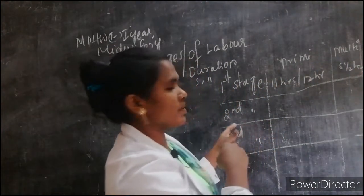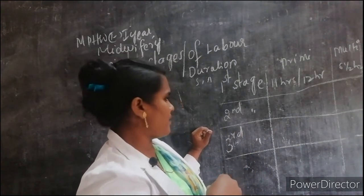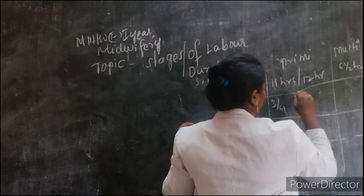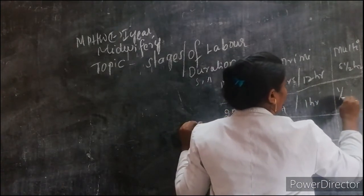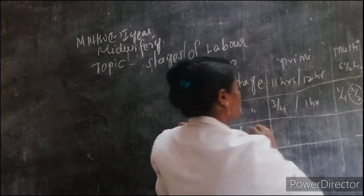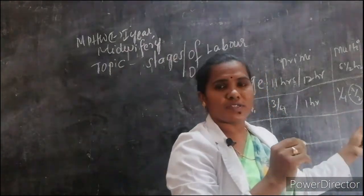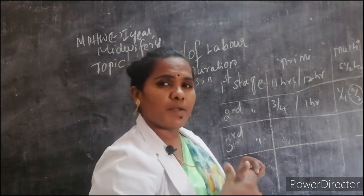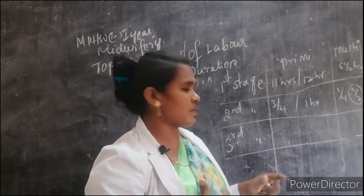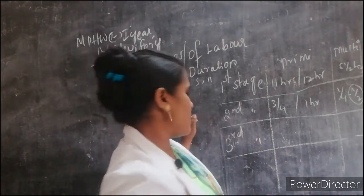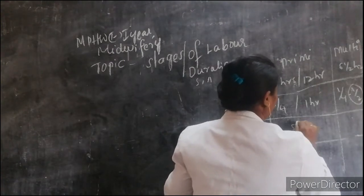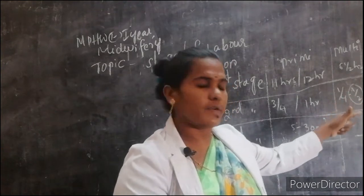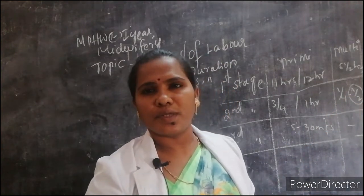In the second stage of labor, the duration is three-quarters to one hour, or alternatively half an hour. There are variations — but generally 5 to 30 minutes, or 5 to 20 minutes. The third stage duration is around 5 to 30 minutes, with some variation.